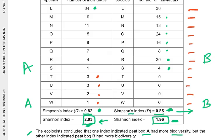When you look at peat bog A and peat bog B, peat bog A has a higher number of species and a higher Shannon index. Peat bog A has 12 species; peat bog B has only 8 species. Species richness — the number of species — is more important to the Shannon index.